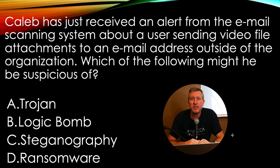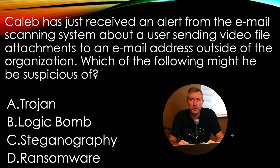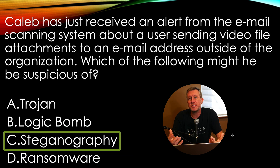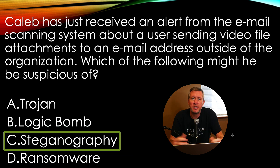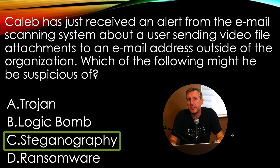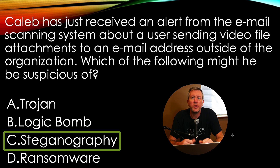If you need to pause and think about this for a moment, do so now. When we look at these terms, we know that A, B, and D are all types of malware, whereas C — steganography — is a form of obfuscation where you can hide certain types of data within another file, such as a video file, an audio file, or a picture file. It should be extremely difficult, if not nearly impossible, to detect that there is any confidential or proprietary information being hidden within that file as it's being transmitted out through the network.